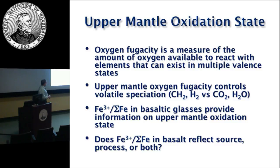The first-hand information about the oxidation state of the convecting upper mantle comes from measurements of ferric over total iron in basaltic glasses. What I want to get at today is the question: do these measurements of ferric over total iron in basalt reflect the source — which is the assumption in interpreting the data at present — does it reflect the process of partial melting, or is it a combination of the two?